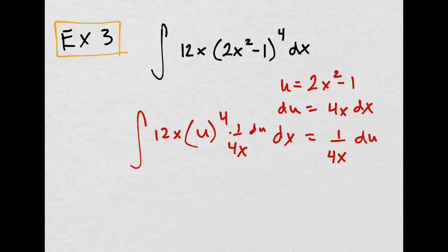That's times 1 fourth x du. That's nice. The x's cancel. And the 12 changes to a 3, right?